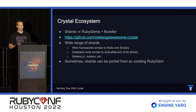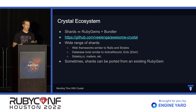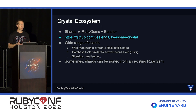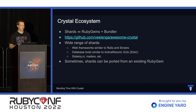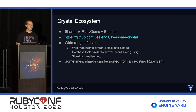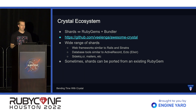Let's talk about the Crystal ecosystem as a whole. The first thing to think about are called shards — shards are the Crystal equivalent of RubyGems. However, the tooling for shards also includes functionality similar to Bundler, so it's really RubyGems plus Bundler together. There is an awesome Crystal list that contains a wide variety of shards: web frameworks similar to Rails and Sinatra, database tools similar to ActiveRecord and also Ecto for Elixir fans, a full port of Sidekiq, tools for mailers, and tools for most common problems. Sometimes shards can even be ported from an existing RubyGem.